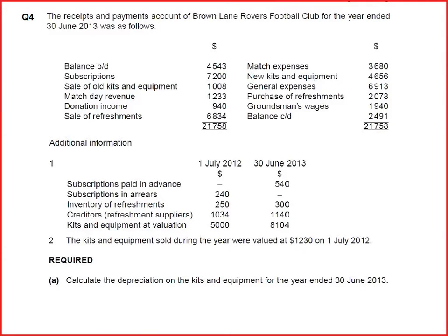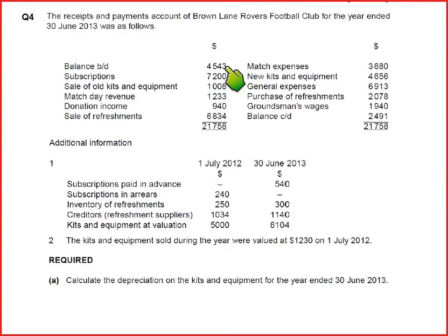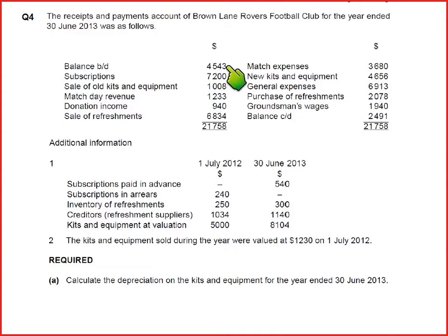Let me read the question. The receipt and payment account, that is the cash book, for Brown Lane Roberts Football Club for the year ended 30 June was as follows. We have a cash book given. Balance brought down is basically the bank balance — if it's on the debit side it's the bank balance, and if it's on the credit side it means bank overdraft. In this specific case it is on the debit side: 4,543, meaning it is a balance at bank.